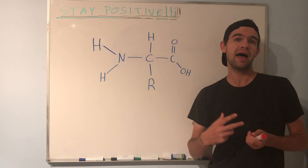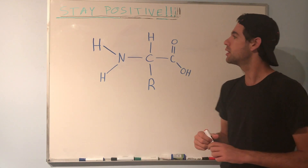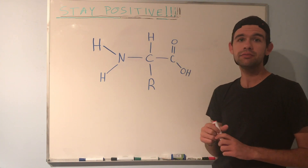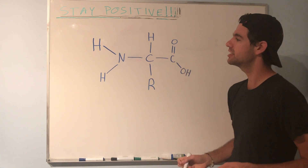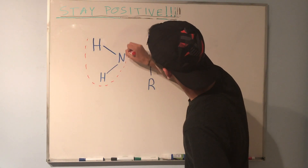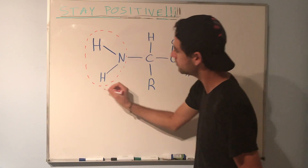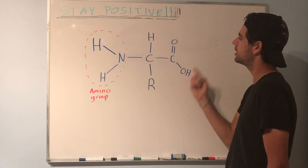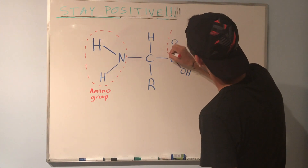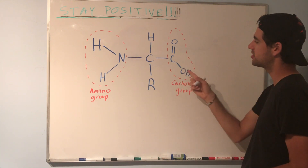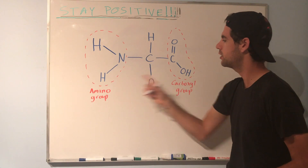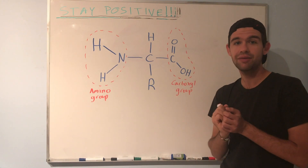First let's talk about what amino acids typically share. This is the general structure of an amino acid. It's called an amino acid because this group right here is called an amino group, and this group is a carboxylic acid group or a carboxyl group. Since this carboxyl group is acidic — it has an acidic hydrogen — we call this an amino acid. That's where the name comes from.